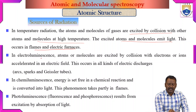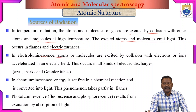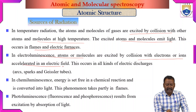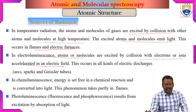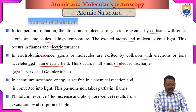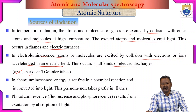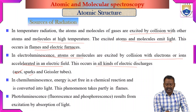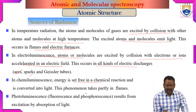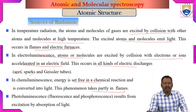In electroluminescence, atoms and molecules are excited by collision with electrons or ions accelerated in an electric field. This occurs in all kinds of electric energy discharges such as arcs, sparks, and Geissler tubes. In chemical luminescence, energy set free in a chemical reaction is converted into light. This phenomenon takes place partly in flames.